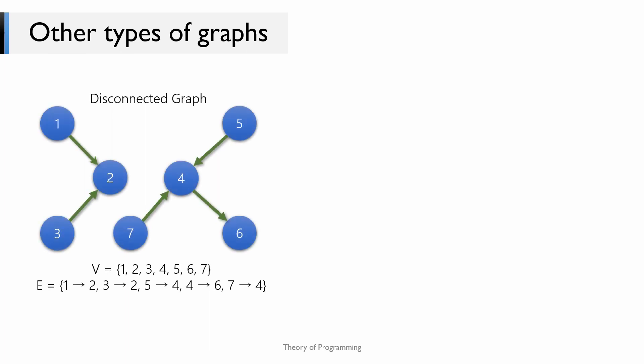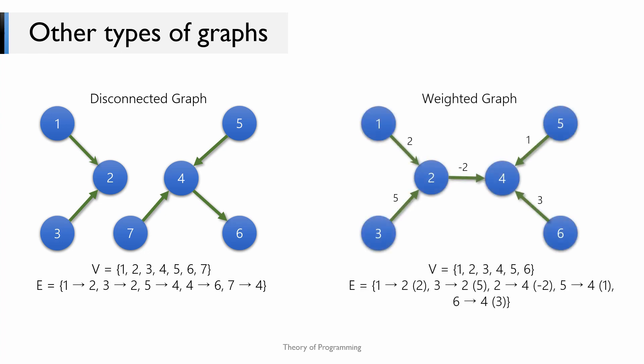Now talking about some other types of graphs you should know about: we have a disconnected graph. A graph is said to be disconnected if there exist any two vertices which cannot be connected by any possible path. In this example, there is no path through which we can go from vertex 4 to vertex 2 or vice versa. Disconnected graphs are a common scenario in networking — in a computer network, each endpoint connected to the network could be a vertex and the connections could be the edges; if there's a network breakdown a certain set of vertices could become unreachable, forming a disconnected graph.